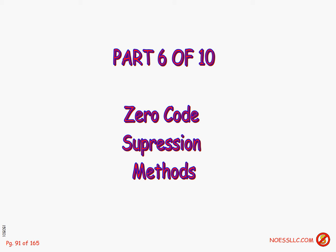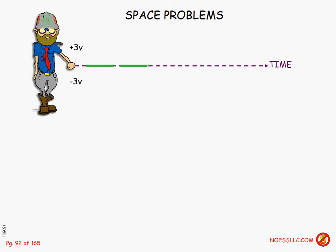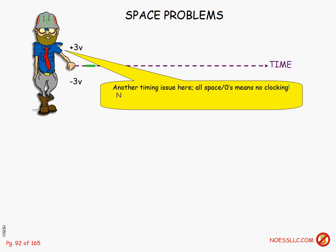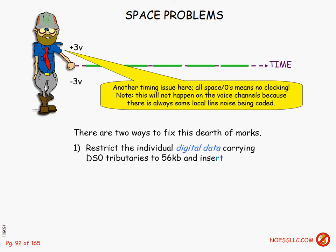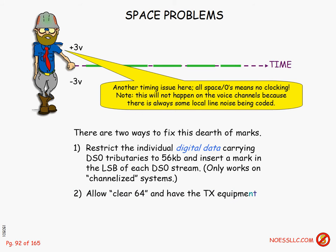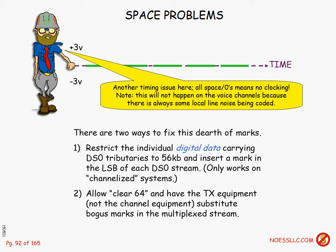I'm hoping this comes out as a kind of linear story — that's certainly my intent. Zero code suppression methods on our digital signal being applied across the tip and ring pair of our T-type or E-type carrier transmission. There are problems when you apply a signal on a twisted pair cable because there's no way to clock the receiver to the transmitter with an extra wire — you only have two wires. This clocking issue is a particular problem if the transmitter is going to send a long string of zeros or no voltages.